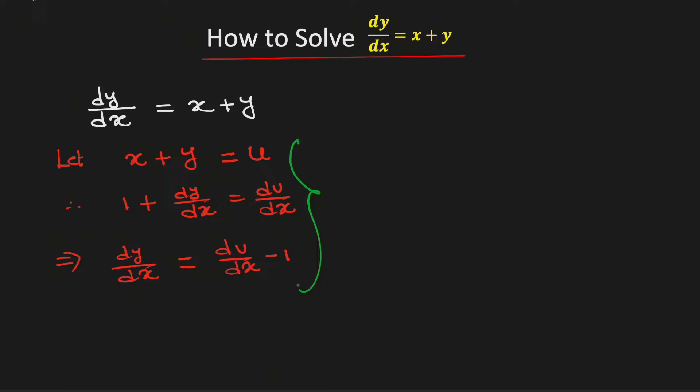Now substituting these values here, we will get that du/dx minus 1 equals u. From here we will get that du/dx equals 1 plus u.